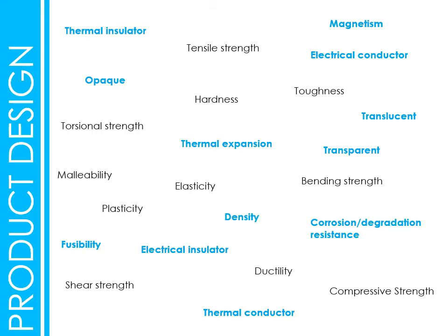Magnetism — materials with iron in them, ferrous metals, have those free electrons that give them their magnetic property. Electrical conductor — conducts electricity very easily. Metals are your go-to for that, but you also have things like silicon.